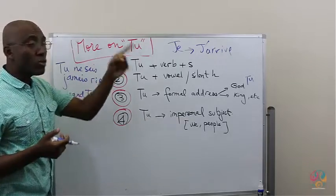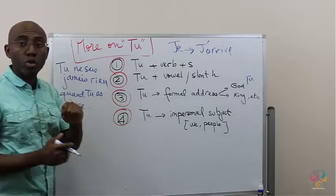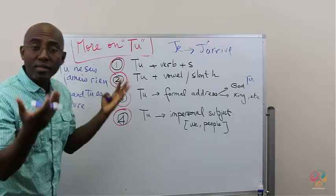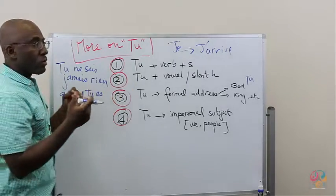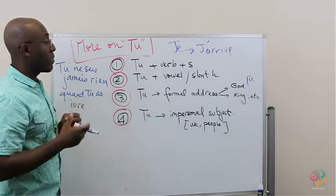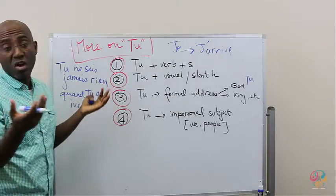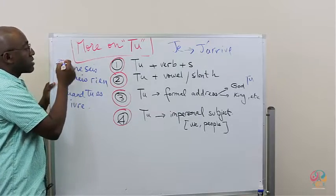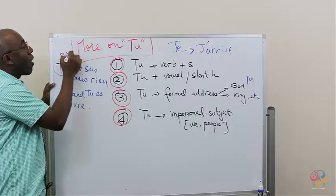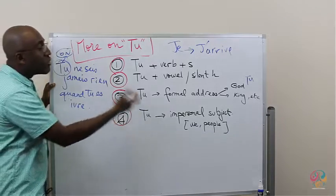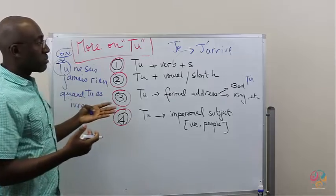I'm saying, people don't know anything. Or, we don't know anything. It's impersonal. People don't know anything when they're drunk. Or, we don't know anything when we're drunk. So, this TU here has for equivalent ON actually, which we'll see later. So, it means people, it means WE, impersonal.